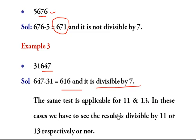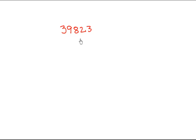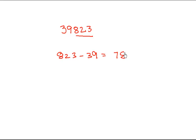Let's take the number 398230. The first group from the unit digit is 823 and the second group is 039. We calculate 823 - 039 = 784. Checking 784 by 7: seven ones are 7, seven twos are 14 — so 784 is exactly divisible by 7. Hence the complete number 398230 is divisible by 7.